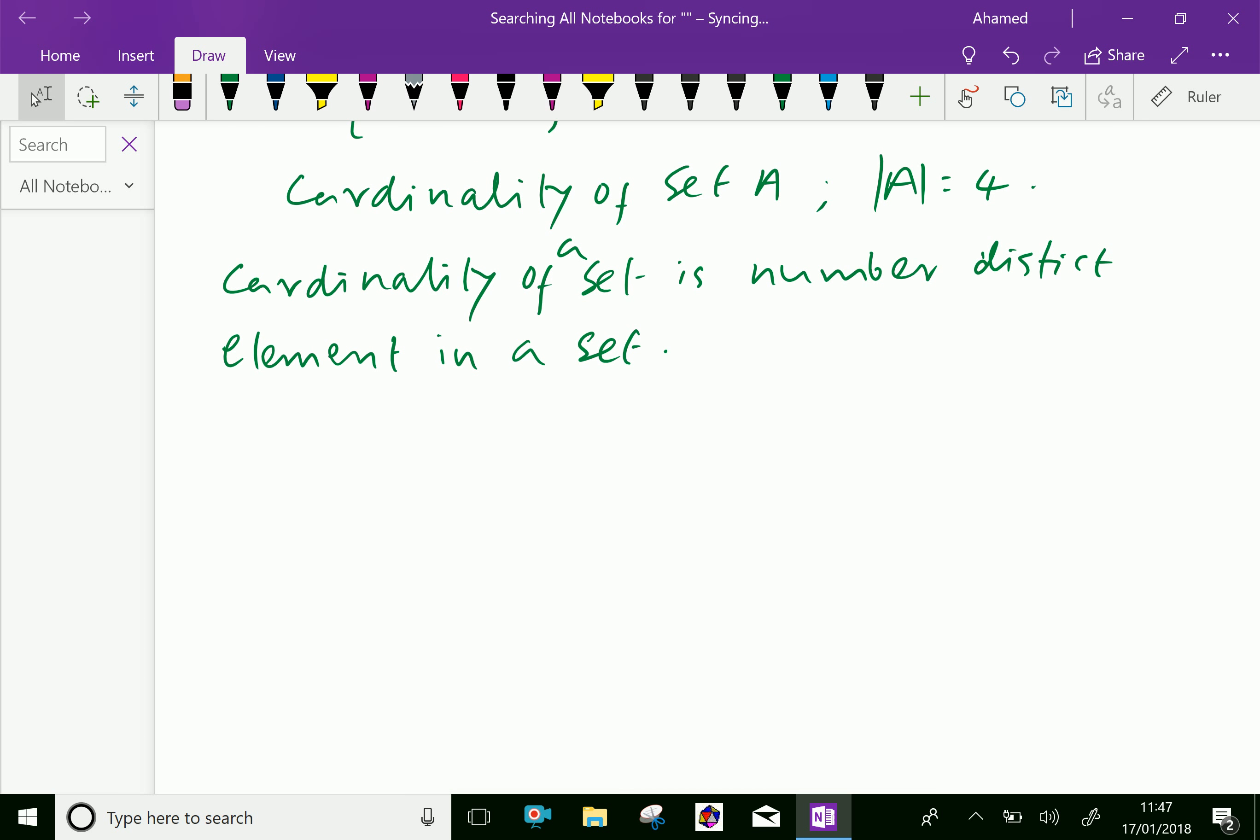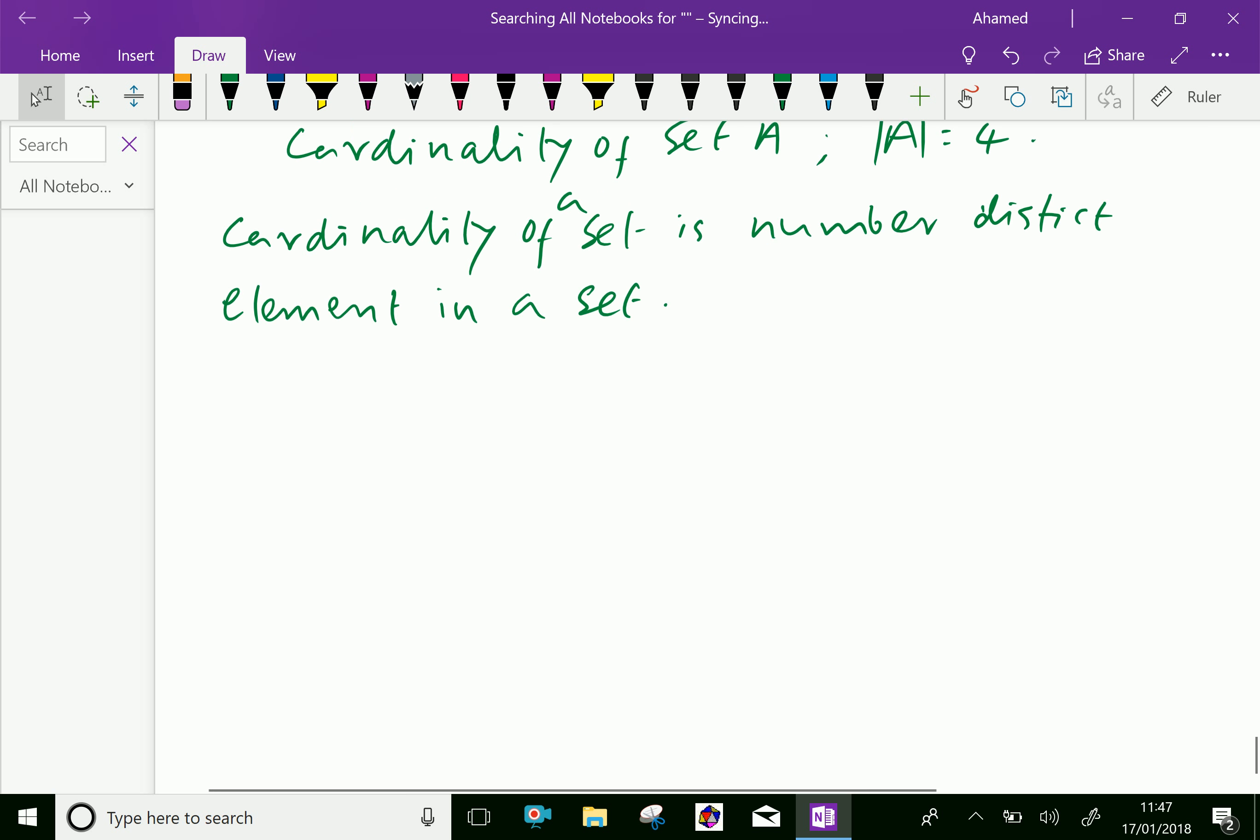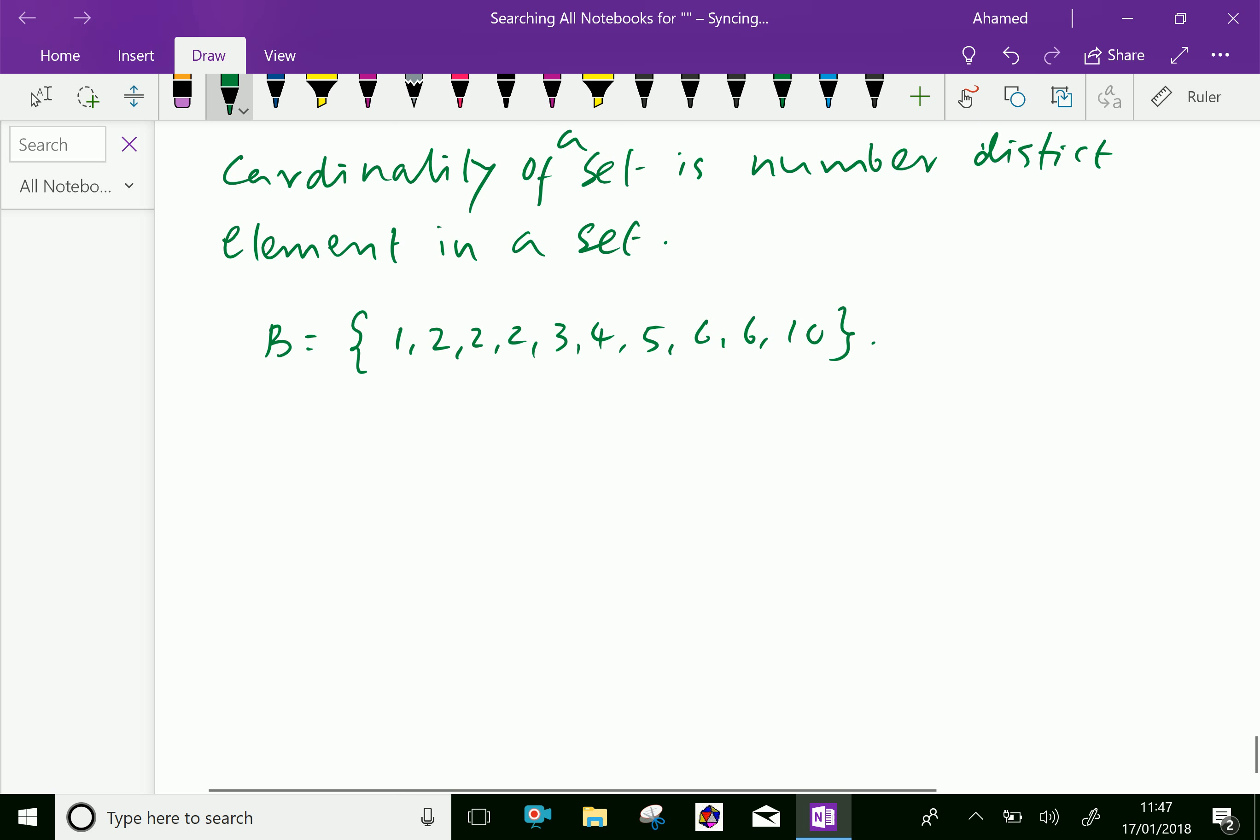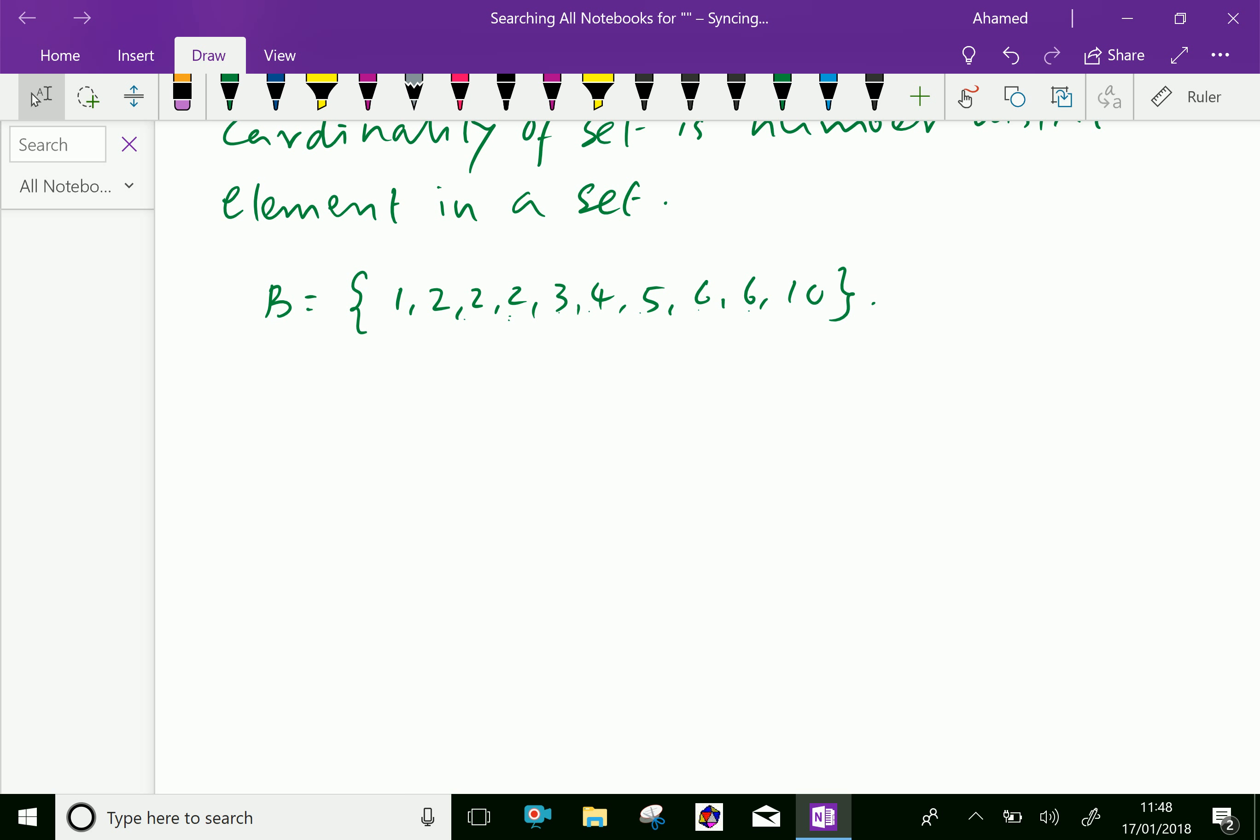Let us discuss more about this. Suppose set B = {1, 2, 2, 2, 3, 4, 5, 6, 6, ...} with 10 elements total. But the cardinality of set B is not 10, since 2 is repeating as well as 6. So first, we will write the distinct elements.